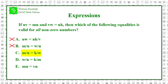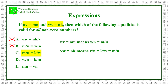Suppose answer C is true: m over u equals k over w. From uv equals mn, we get v over n equals m over u. And from vw equals nk, we get v over n equals k over w. Therefore v over n equals both m over u and k over w, which means m over u equals k over w. And answer C is valid.